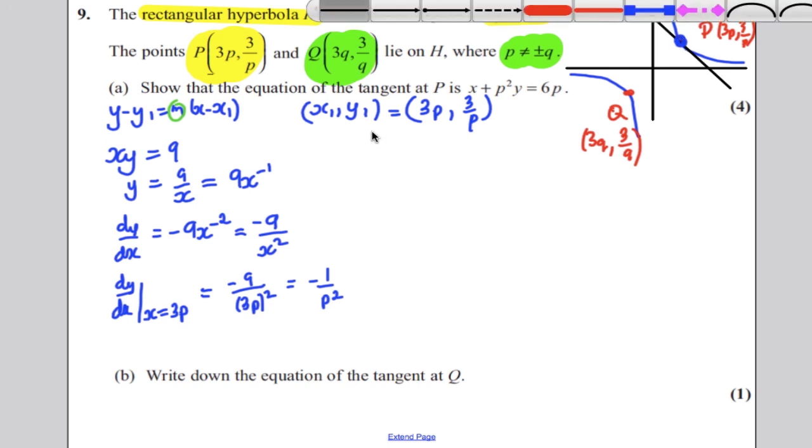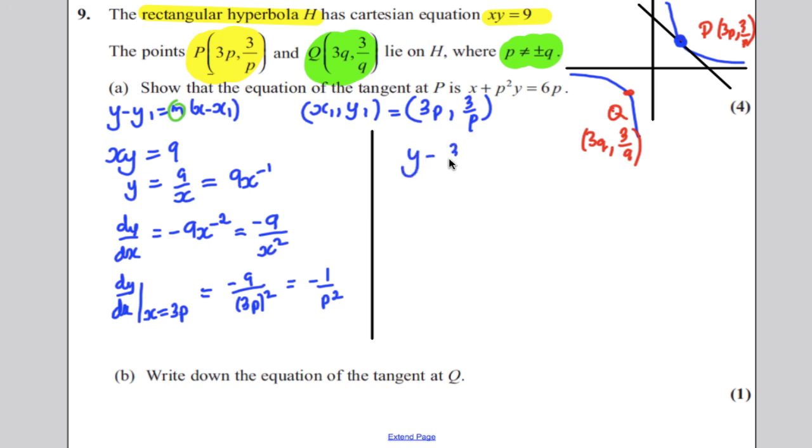So, I'm just going to continue my work along here. We're going to use this equation, y - y₁ = m(x - x₁). So, y - y₁, 3/p,